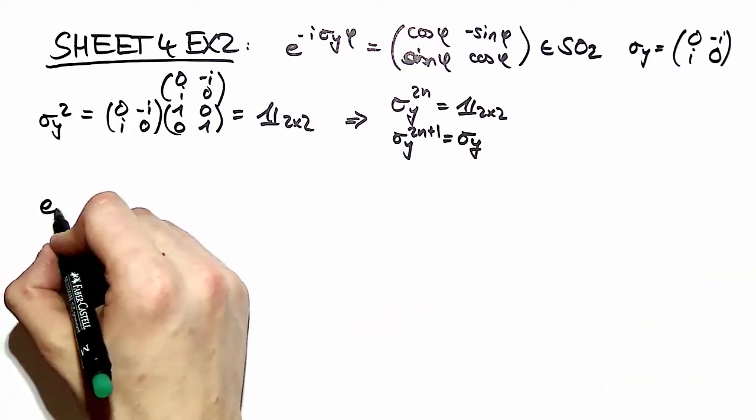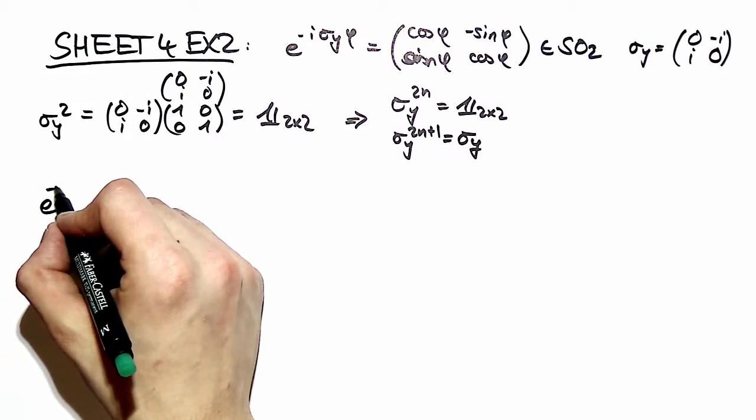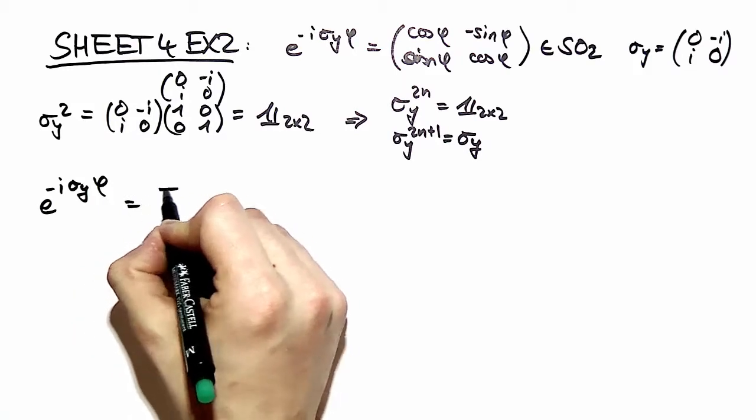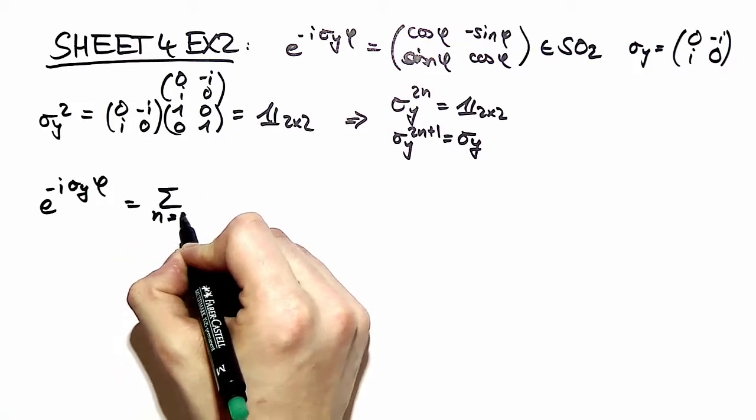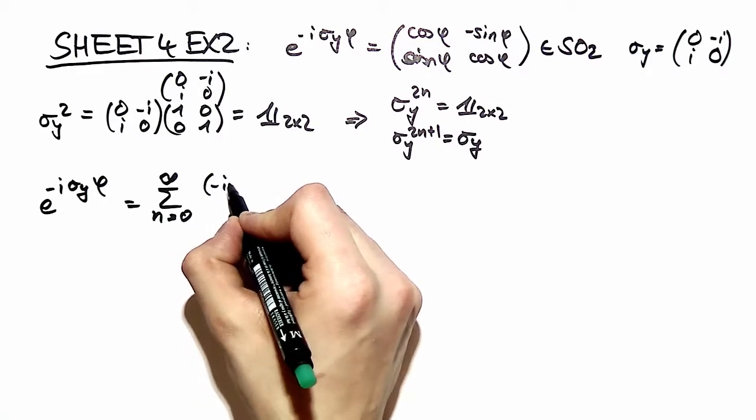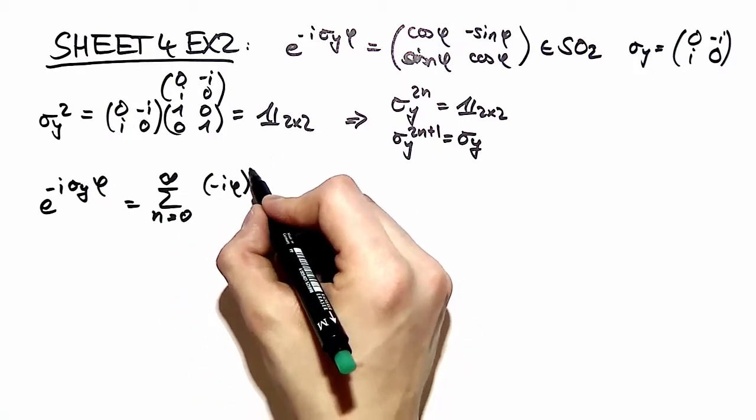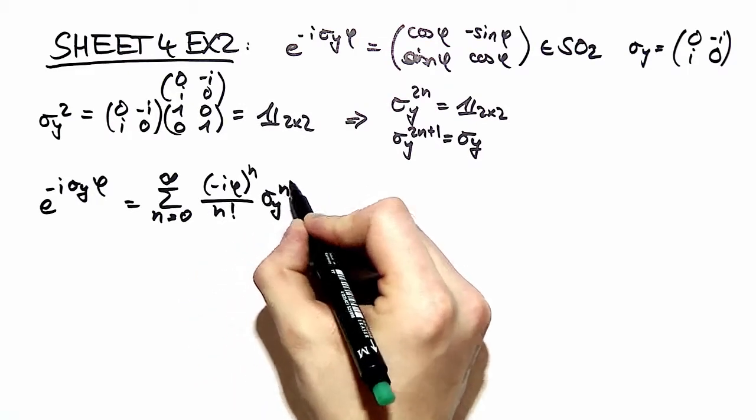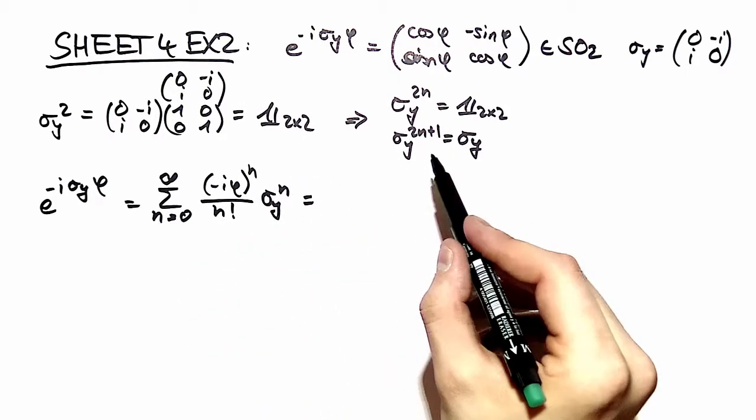Now we are ready to Taylor expand e to the minus i sigma y times an angle phi. So we have the sum from n equal to zero to infinity and we write here our sigma y separately, namely sigma y to the n. Now we want to use that fact.